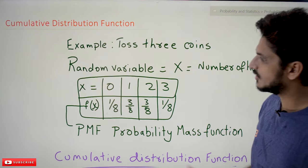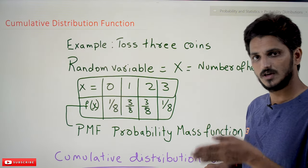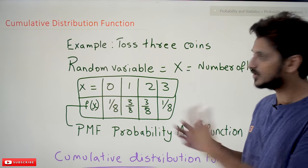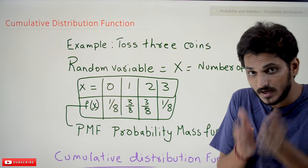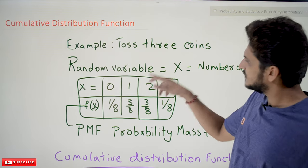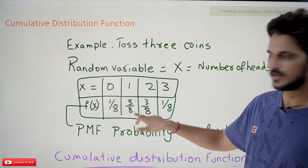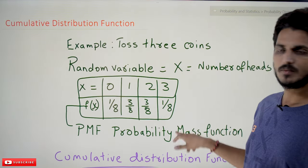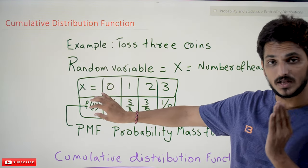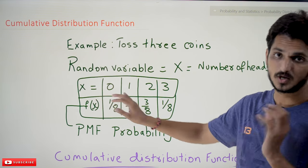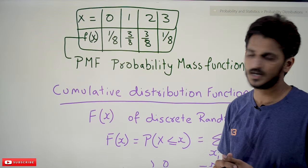The values present in our random variable x are 0, 1, 2, and 3 — meaning zero heads, one head, two heads, or three heads. f(x) is a function that provides the probability values for our random variable x. If you substitute 0 it gives 1/8, substitute 1 gives 3/8, substitute 2 gives 3/8, substitute 3 gives 1/8. This is the probability mass function.